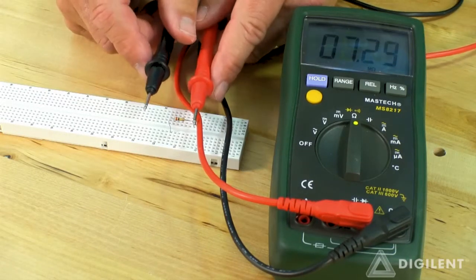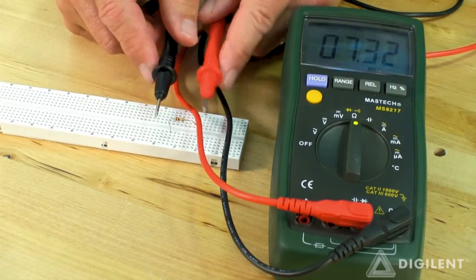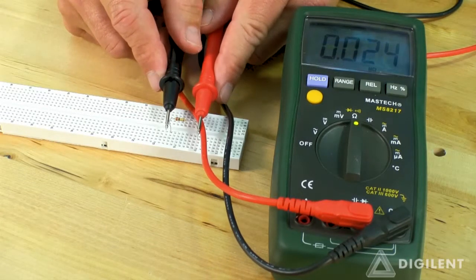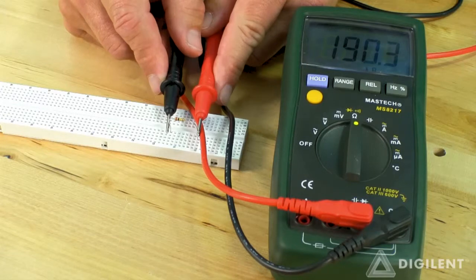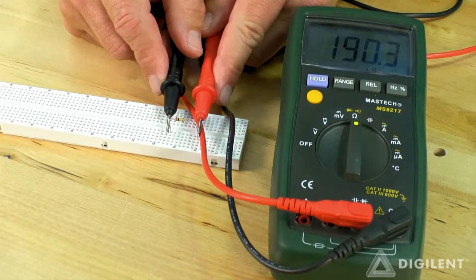Let's measure the resistance of this resistor. To do that, simply place the DMM probes against the terminals of the resistor. The resistance of the resistor is displayed on the DMM. This resistor has a resistance of about 190 kilo-ohms.